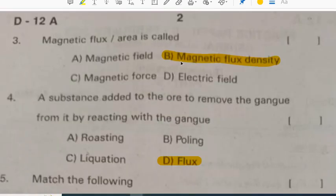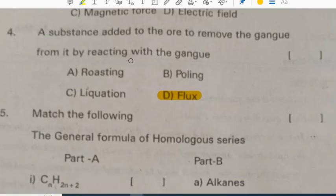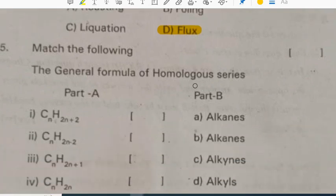Magnetic flux per area is called magnetic flux density. A substance added to the ore to remove the gangue is called flux.